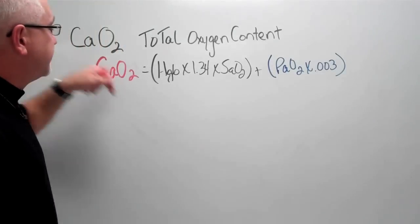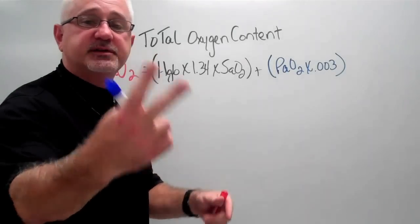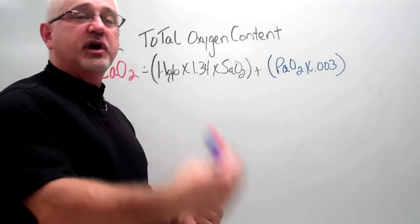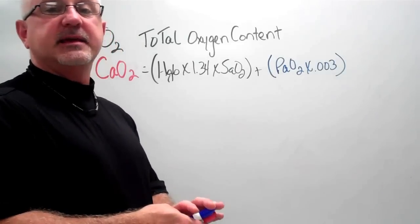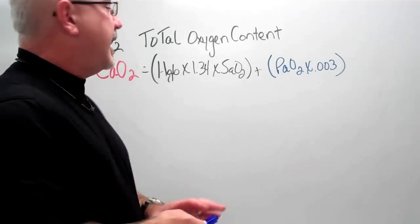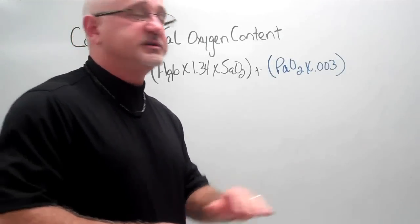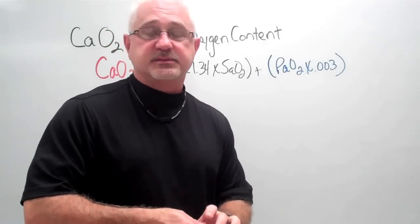Our total O2 content formula is made up of two parts because that is how oxygen is transported in the body. The majority of the oxygen is transported by the hemoglobin molecule and the other part of oxygen transport is completed by being dissolved in the plasma.